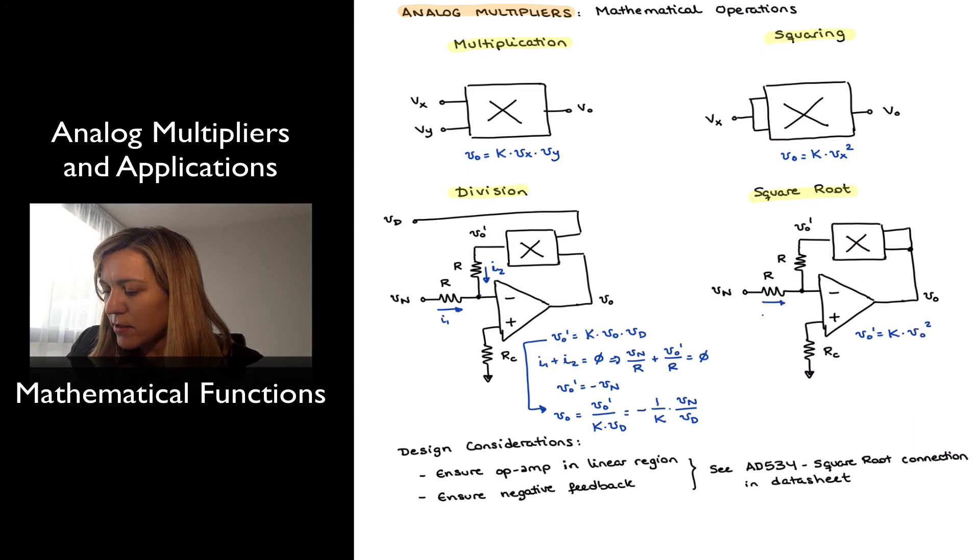Again, I have that the sum of these two input currents, i1 and i2 must be equal to 0, which implies that vn over r plus vout prime over r is equal to 0. Or in other words, that vout prime is equal to negative vn.